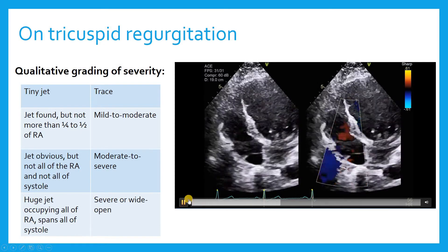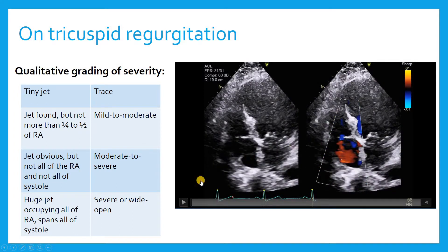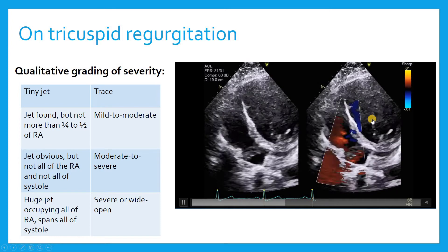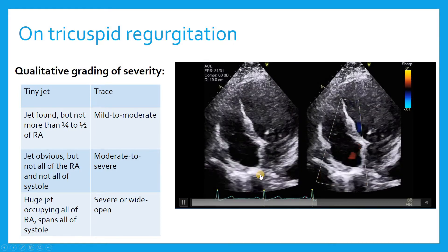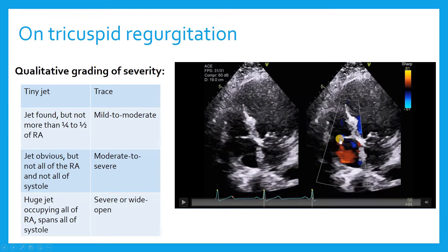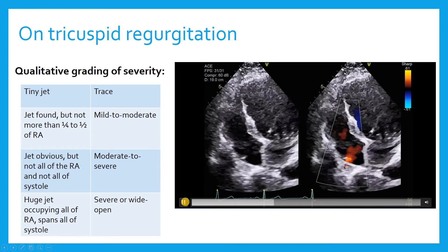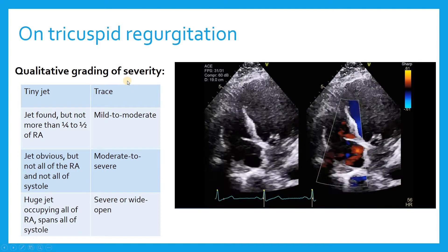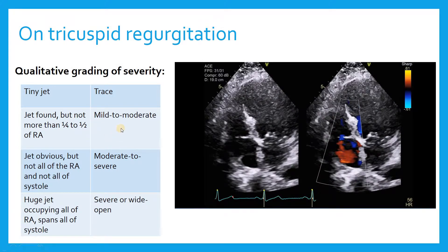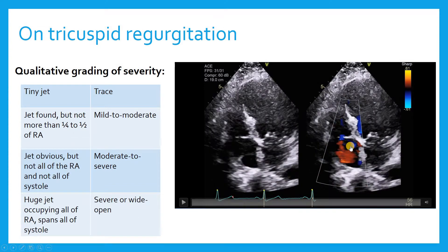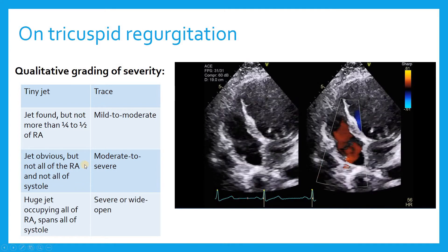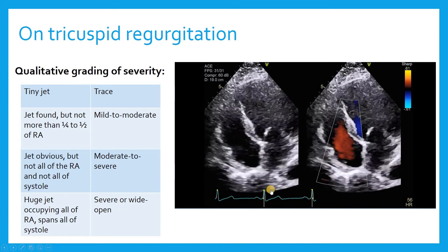Grading TR is kind of the purview of the intensivist. I don't think you'll be asked to quantify tricuspid regurgitation beyond a qualitative assessment when working in the ICU. What I've found is this qualitative grading scale works quite well and generally matches echoes interpreted by cardiologists. If you're looking at a tiny jet, that's trace TR. If you're seeing a jet but it's not occupying more than a quarter to a half of the right atrium, it's mild to moderate. If the jet is obvious but not filling all the right atrium and not all of systole, then it's moderate to severe. And if there's a huge jet, you call it severe to wide open.